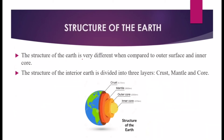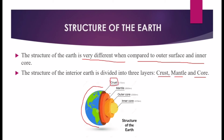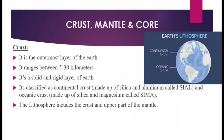The structure of the Earth is very different when comparing the outer surface to the inner core. It is divided into three layers: the crust, the mantle, and the core. In the diagram, the topmost layer in blue and green is the crust, below that is the mantle in orange, next is the outer core in yellow, and inside that is the inner core.